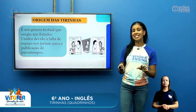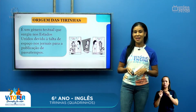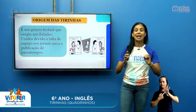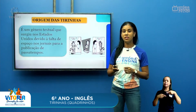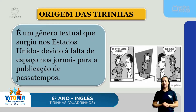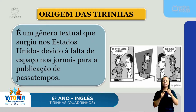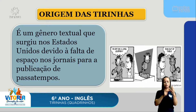Olha bem essa tirinha — ela é em inglês. Como vocês podem observar, nós temos aqui ao centro a imagem, que a gente chama de linguagem não verbal. O primeiro e o último quadrinho têm algo escrito além da imagem, e temos o do meio, chamado de linguagem não verbal. Mesmo assim, a gente sabe o que está acontecendo na história.